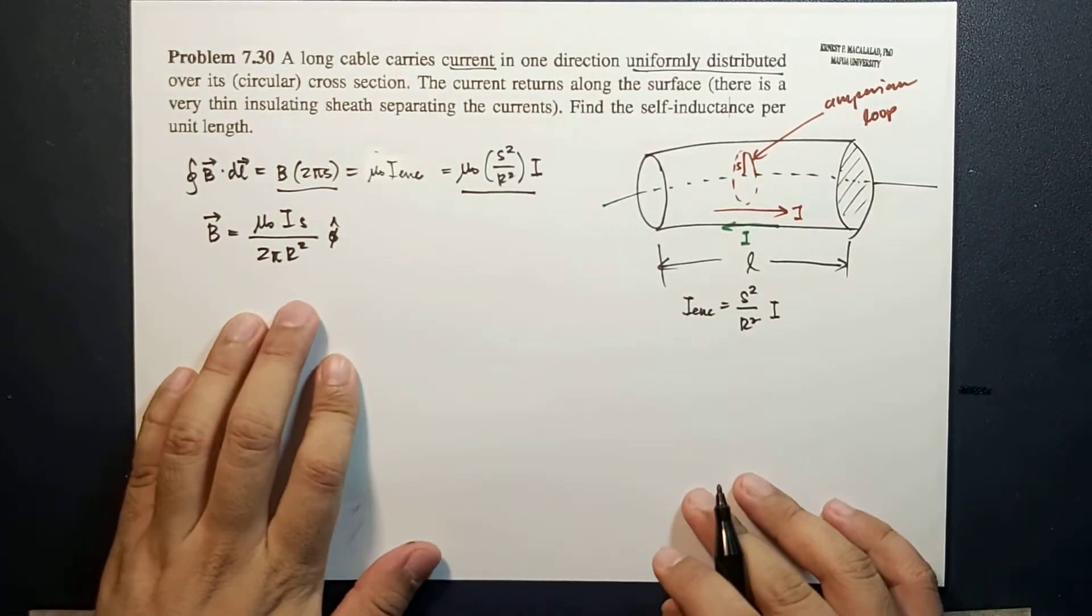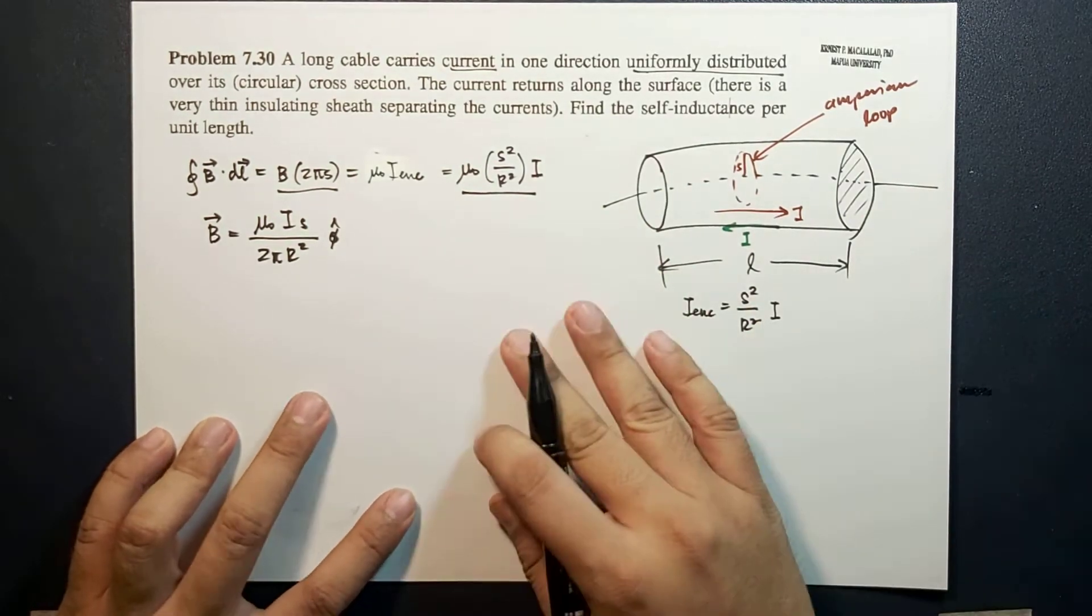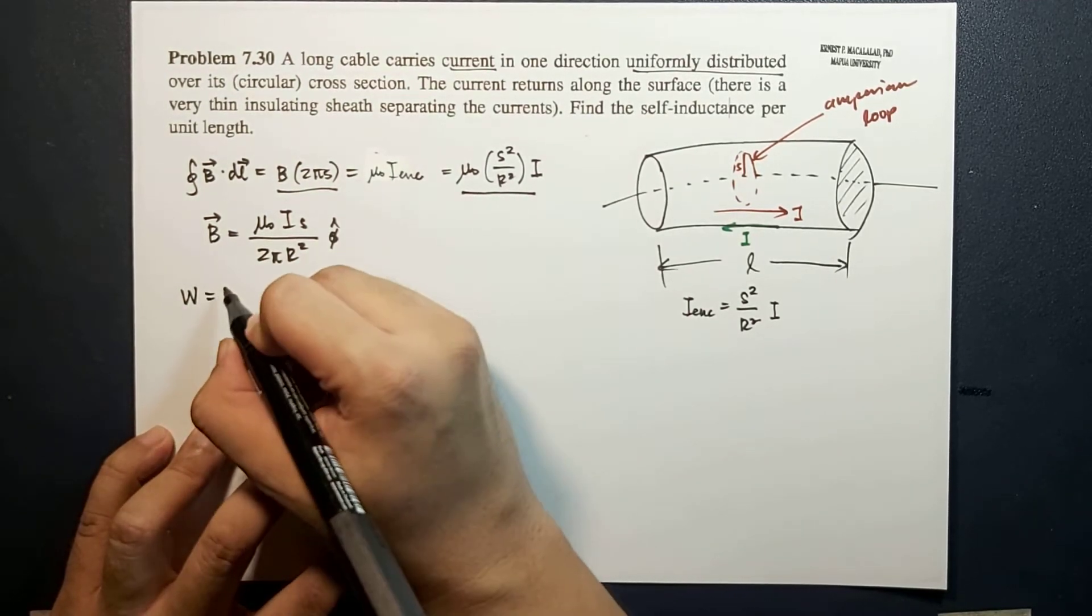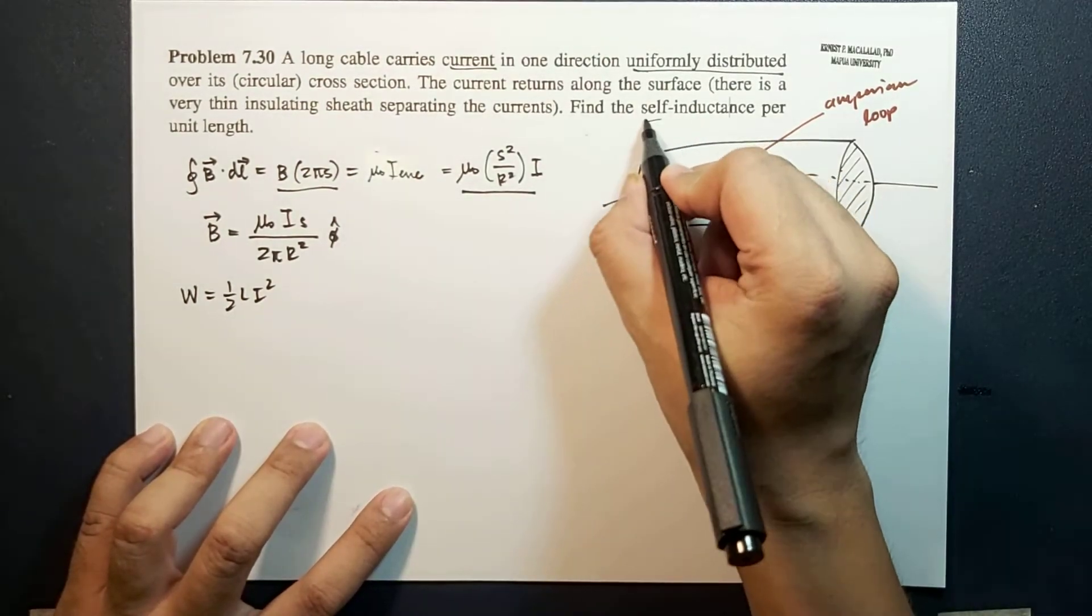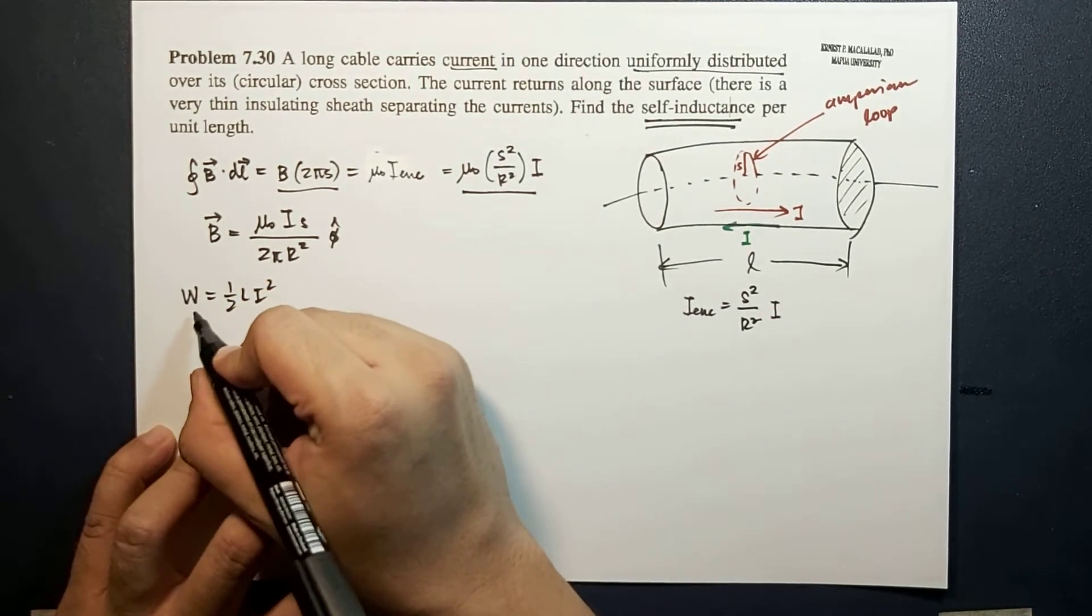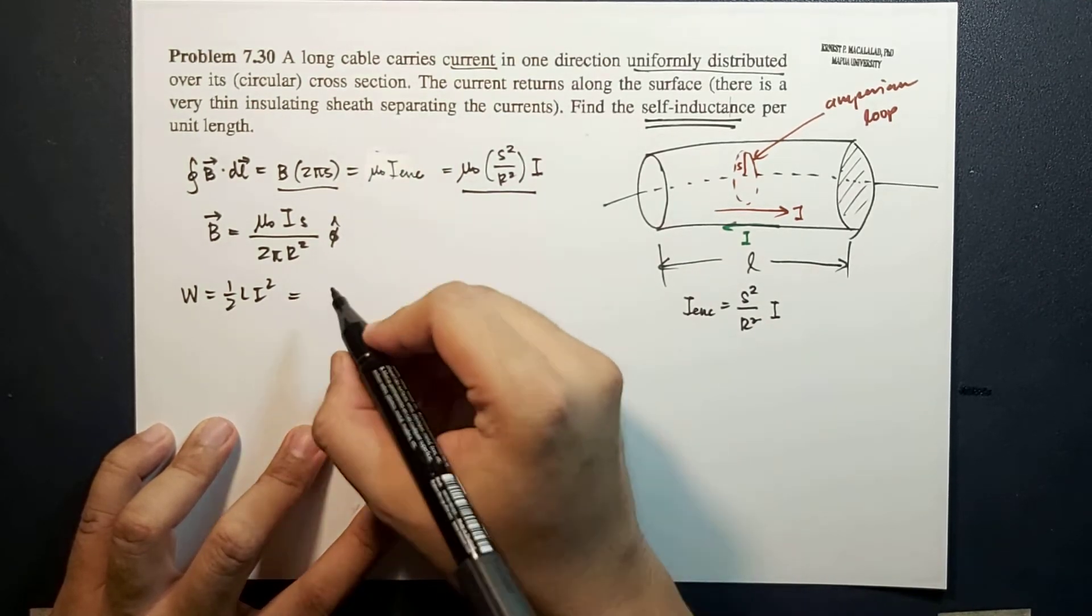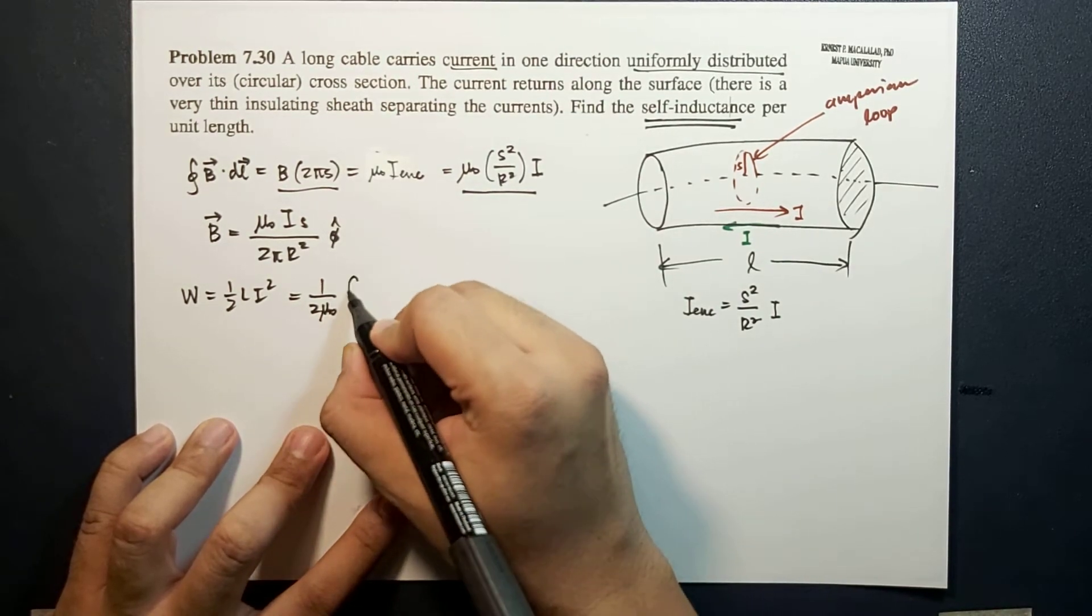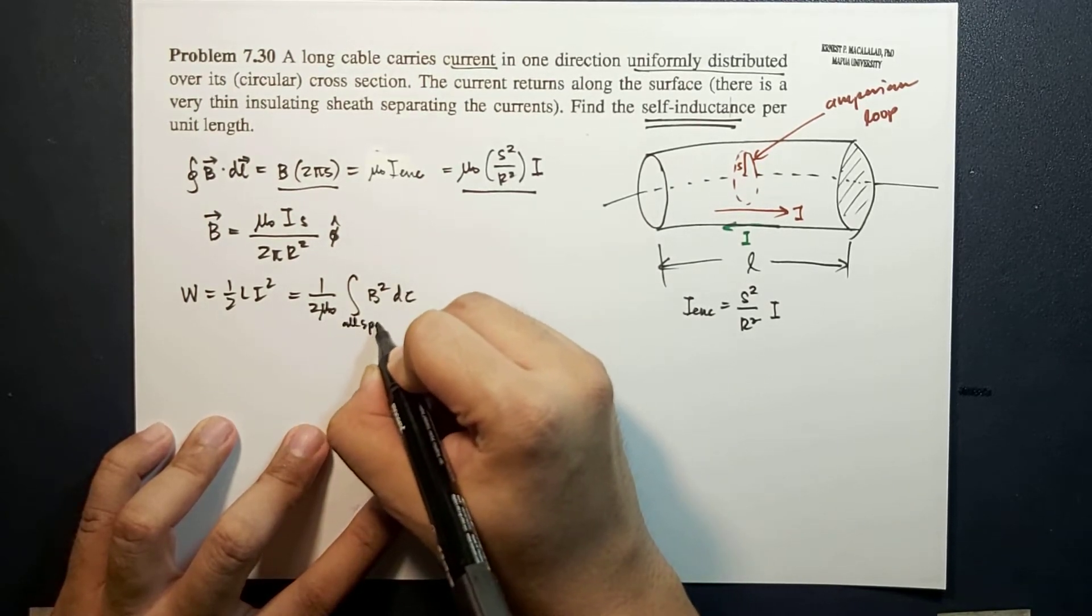If we want to know the self-inductance, remember that self-inductance is related to the stored energy in the magnetic field. The stored energy in the magnetic field is equal to ½LI². We need to find the stored energy using a different approach.